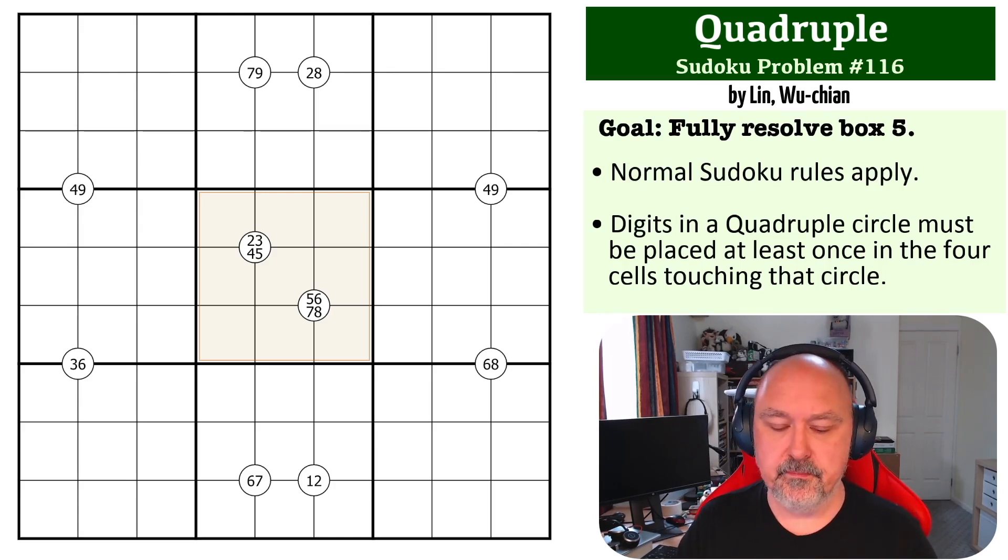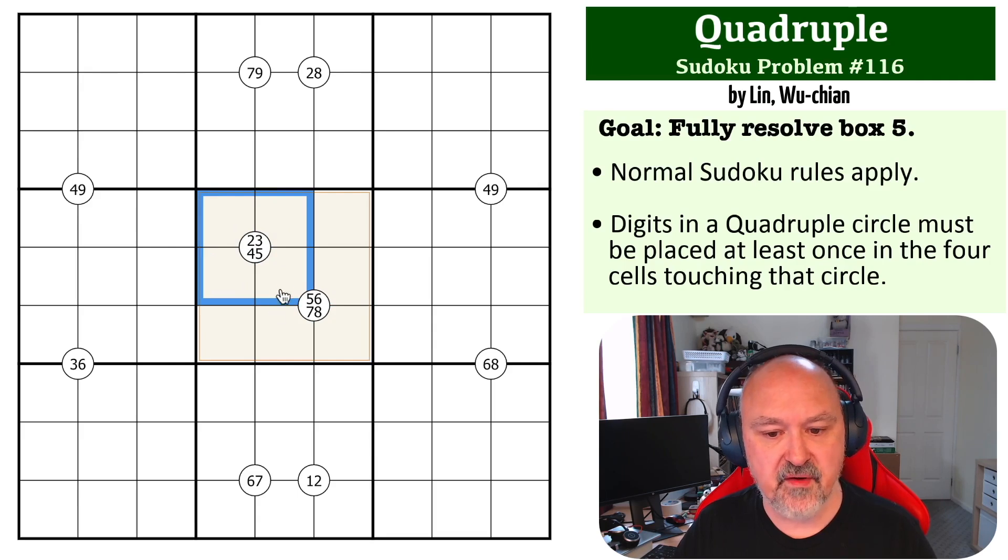If we look at box five first, a good place to start, we can see that these contain two, three, four and five, and these contain five, six, seven and eight. So the only overlap between those is a five, so we can put a five in here. These become two, three, four. These become six, seven and eight.